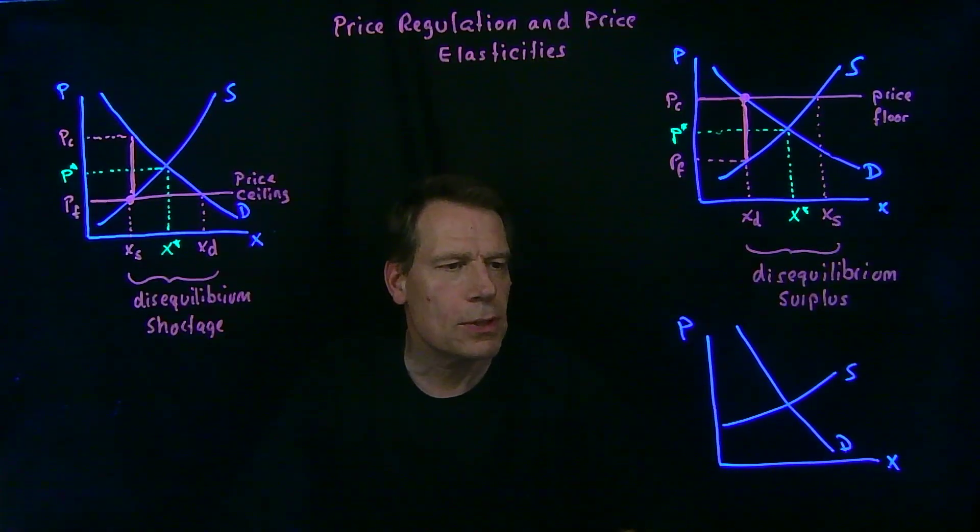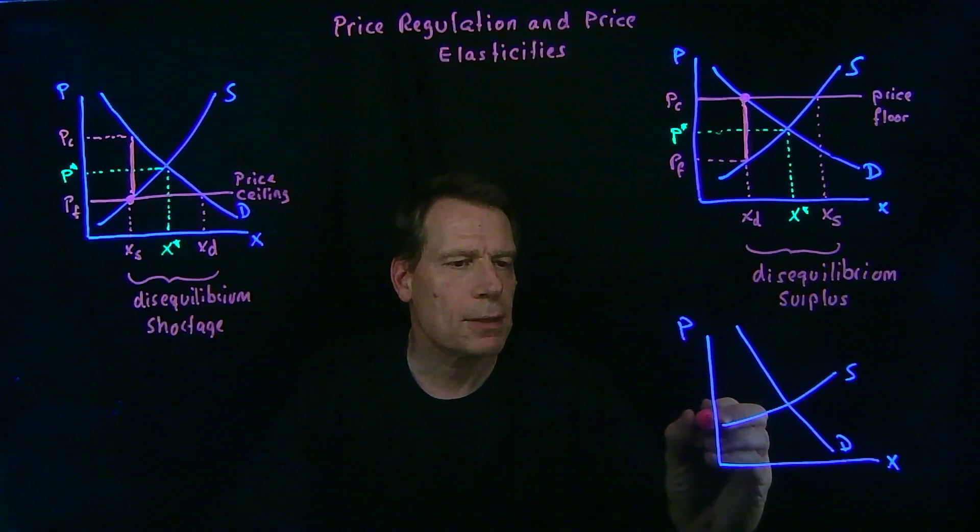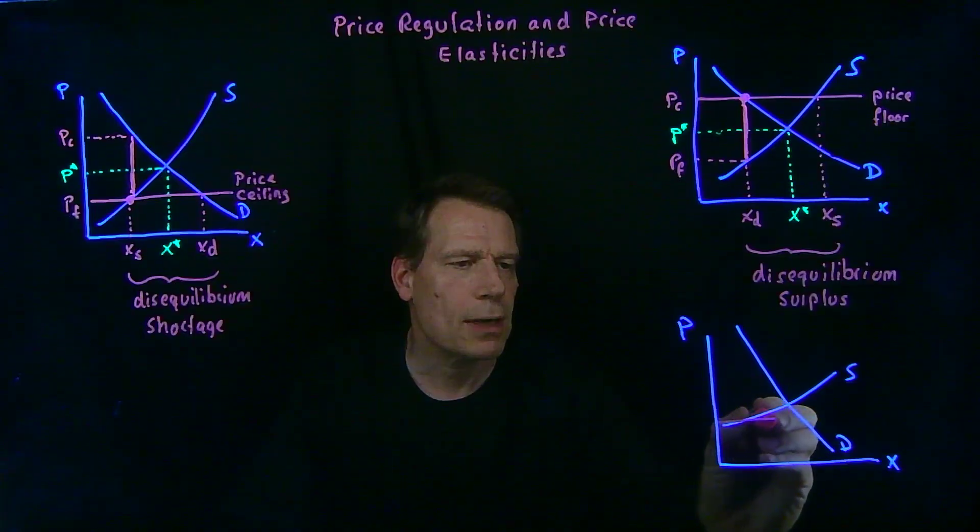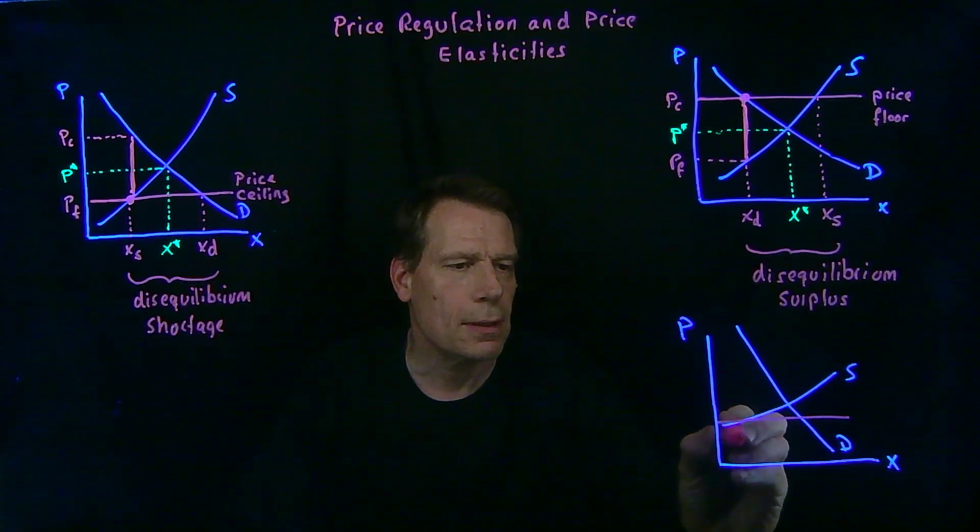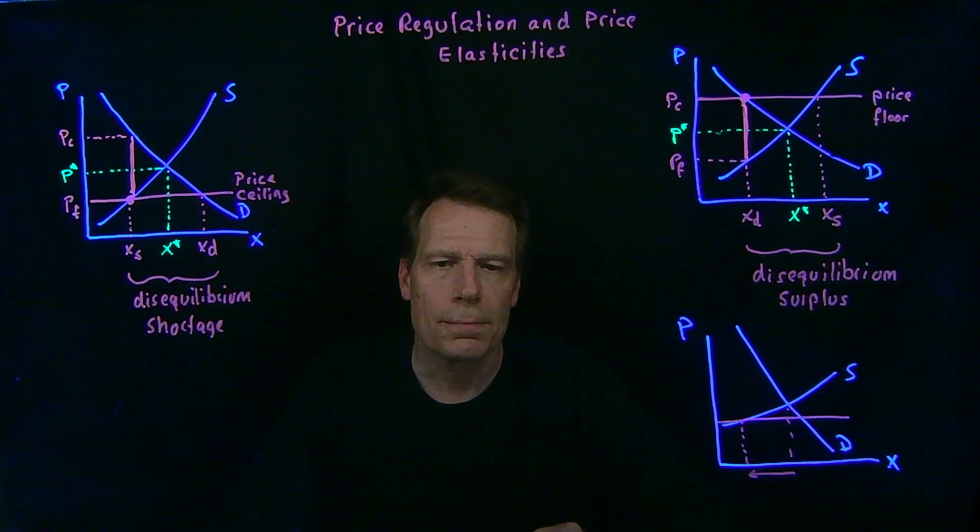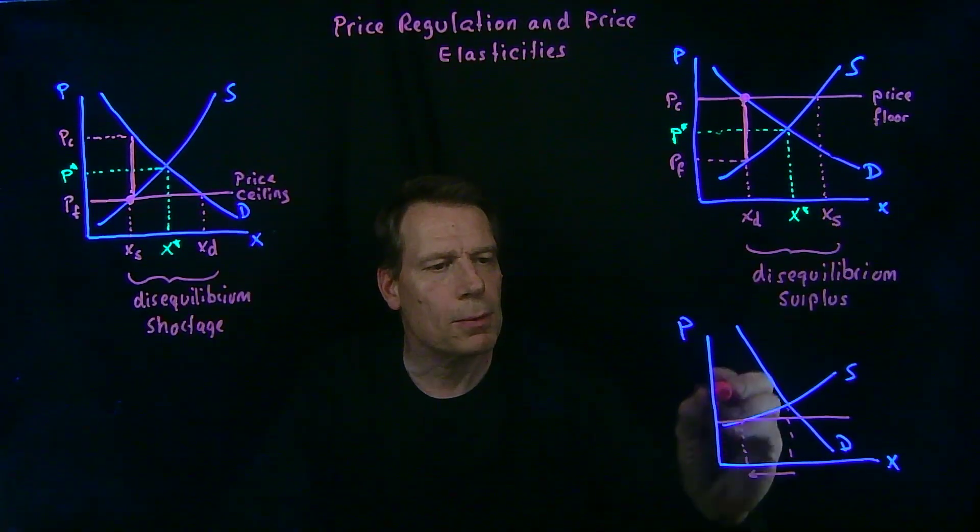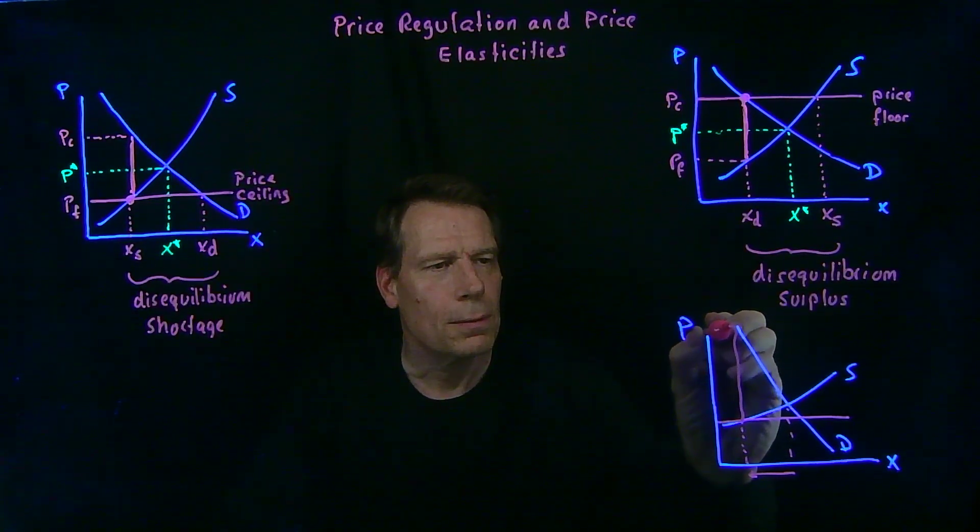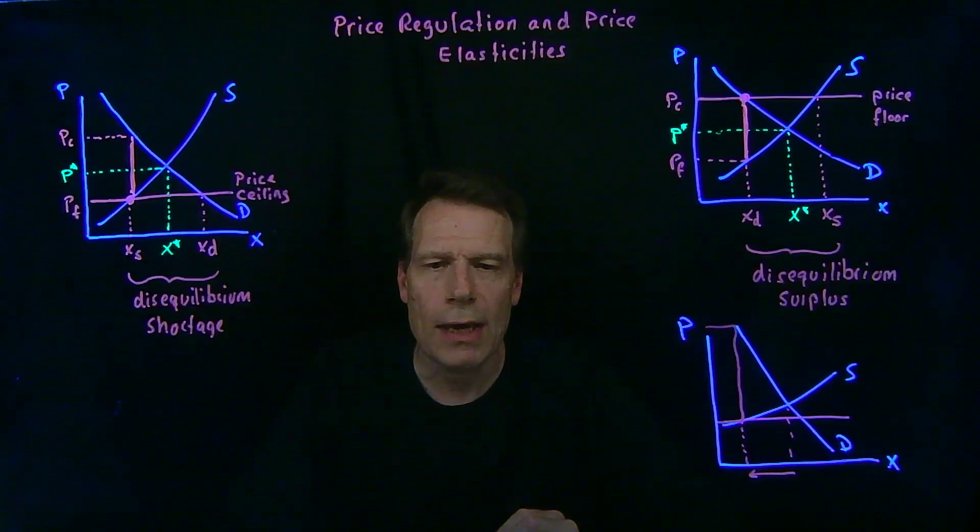Well, you would simply impose a price ceiling in this picture, and even a modest price ceiling would cause the quantity produced in the market to decline by a lot. We would also be able to read in this graph that the equilibrium effort cost for consumers would be very high in this case.